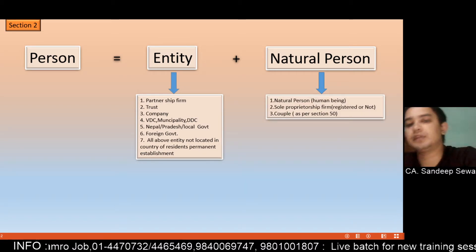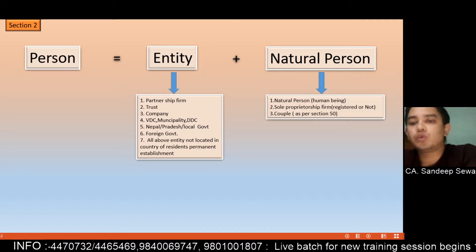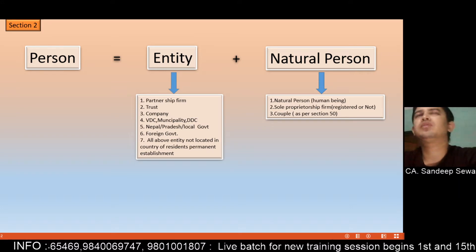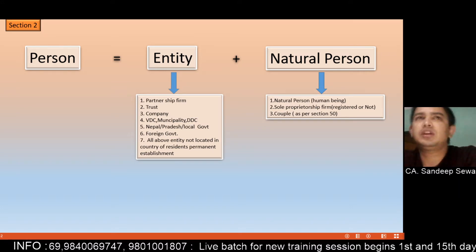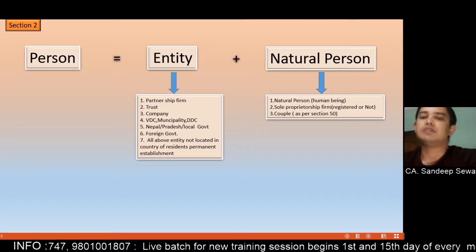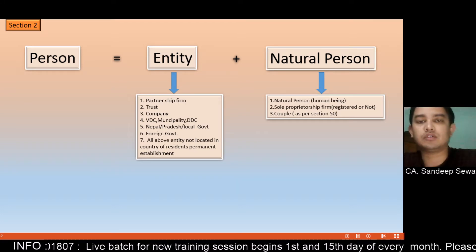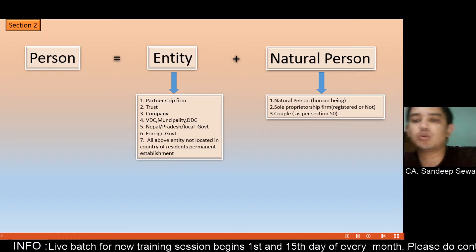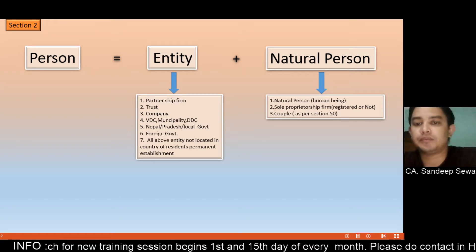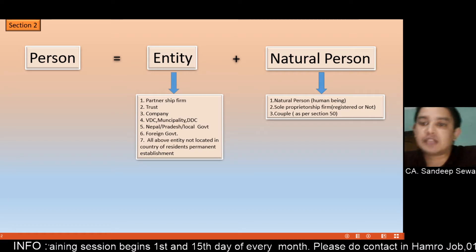What do we call a natural person? This is the actual individual. It's the sole proprietorship firm, or non-registered firm. I will take my stationery as personal property under sole proprietorship. Once I do this, I will get a business. I will take my property to section 50.